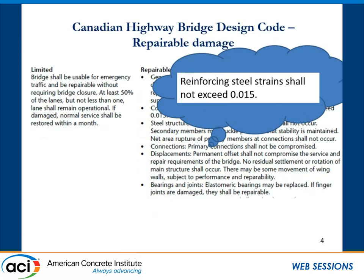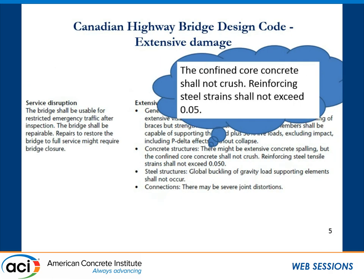Repairable damage in the current code is defined as reinforcing steel strain shall not exceed 0.015. For critical bridges, this applies at a 2475-year earthquake event; for standard highway bridges, it applies at a 975-year earthquake event. At this level, bearings and joints can be damaged and replaced. Extensive damage is defined as the concrete core shall not crush and reinforcing steel shall not exceed 0.05, applying to standard highway bridges at a 2475-year earthquake event.